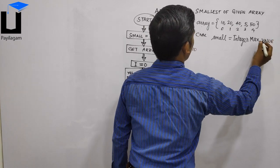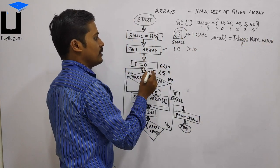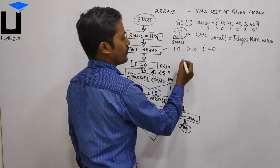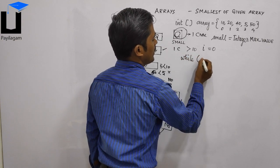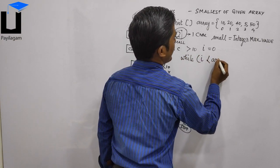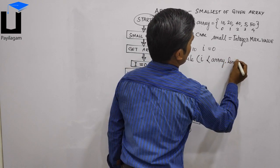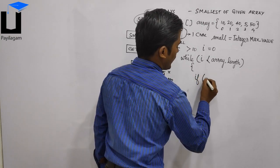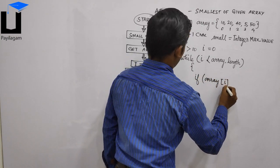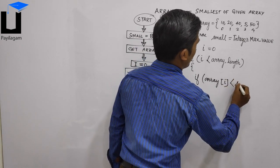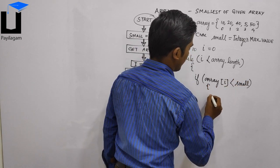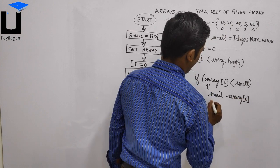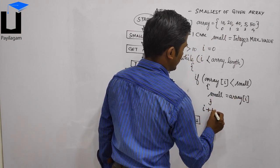There's an integer variable. The maximum size is Integer.MAX_VALUE. Then i equals 0. While i is less than array.length, we check the condition: if array[i] is less than small, then small equals array[i]. Then i++ to increment.